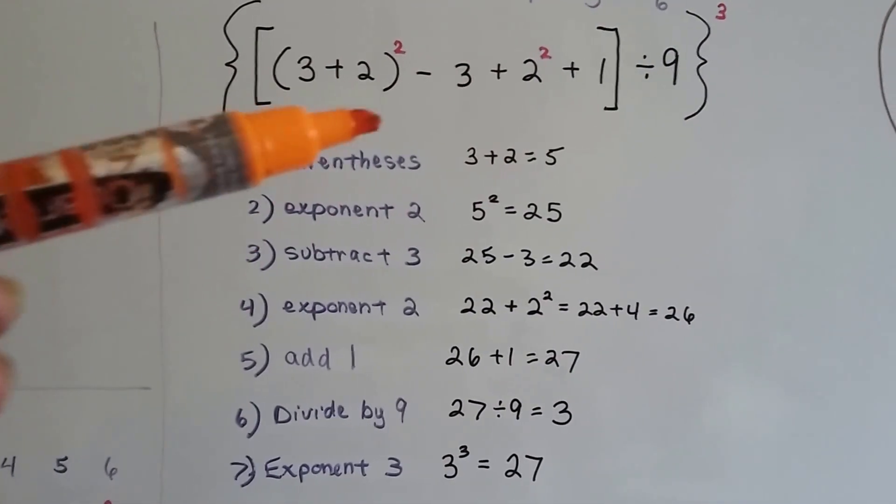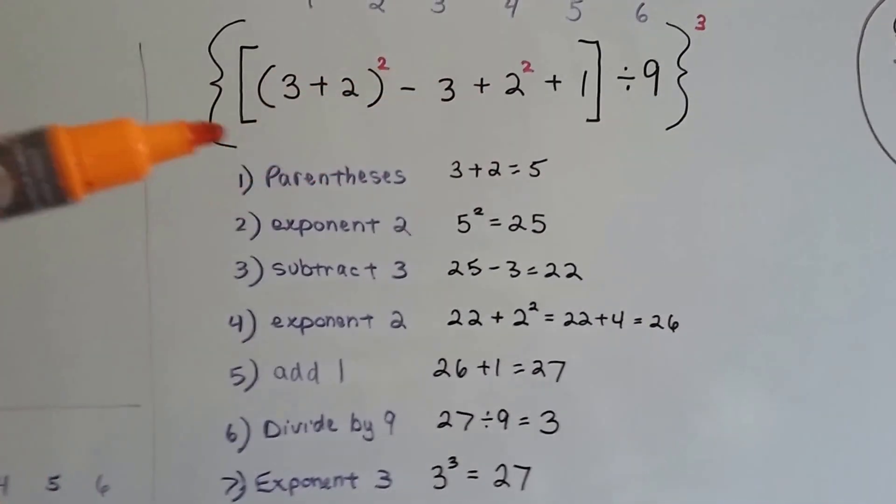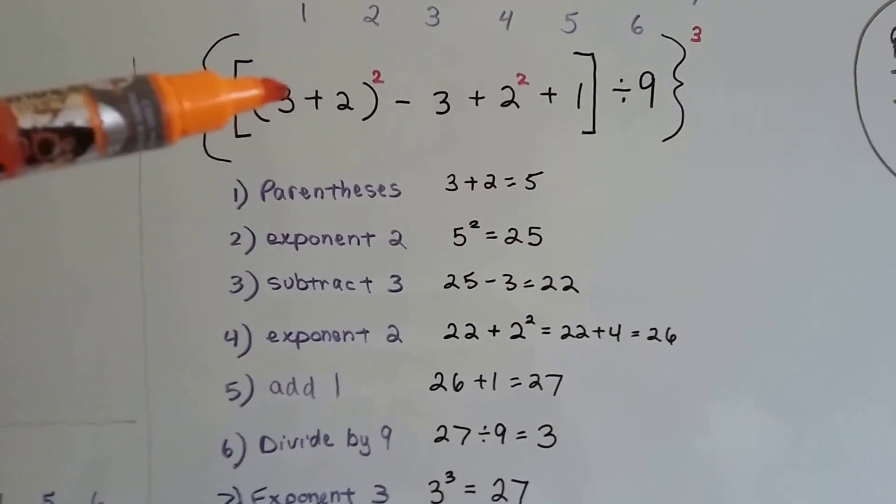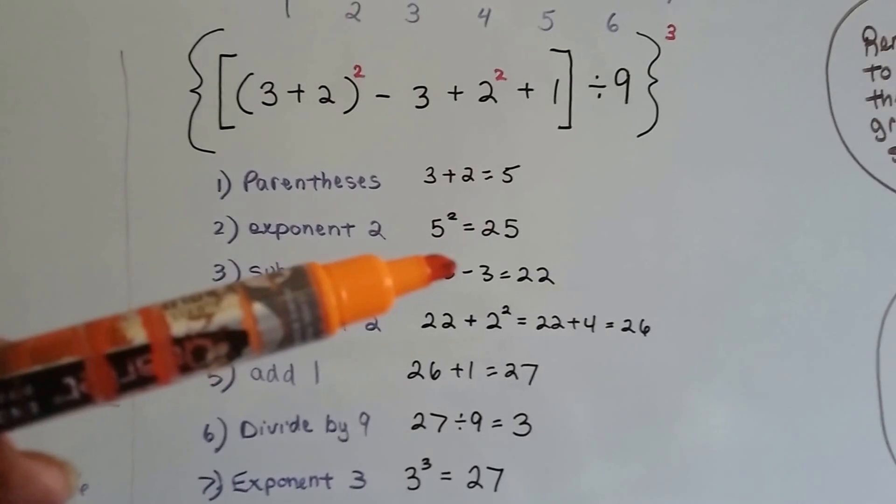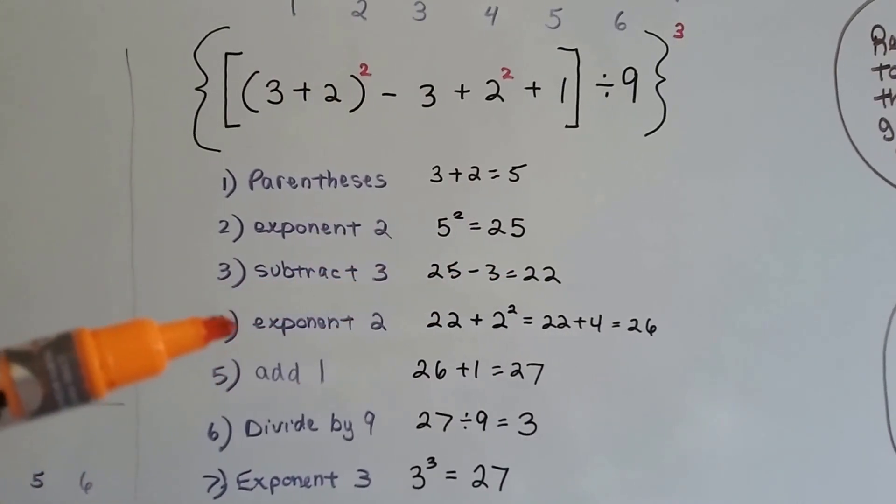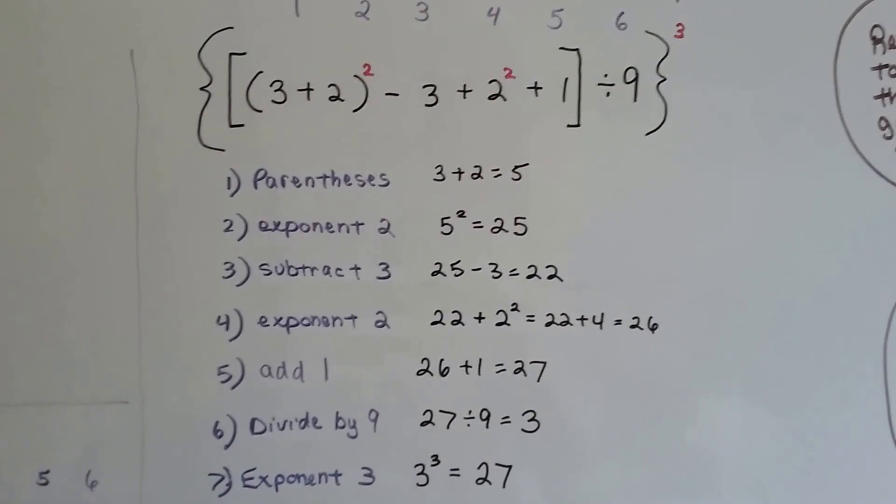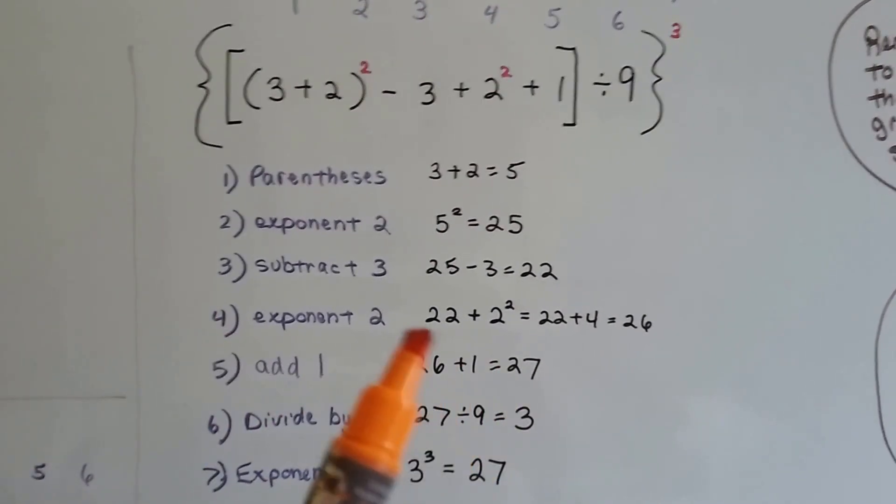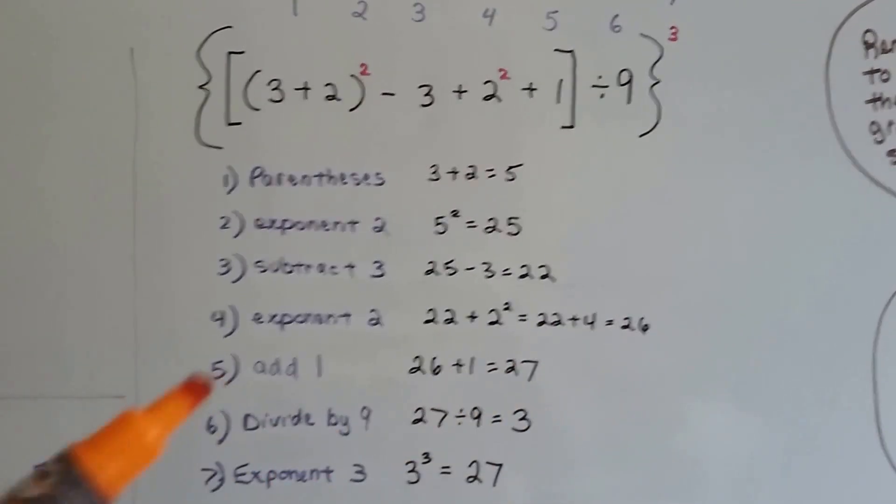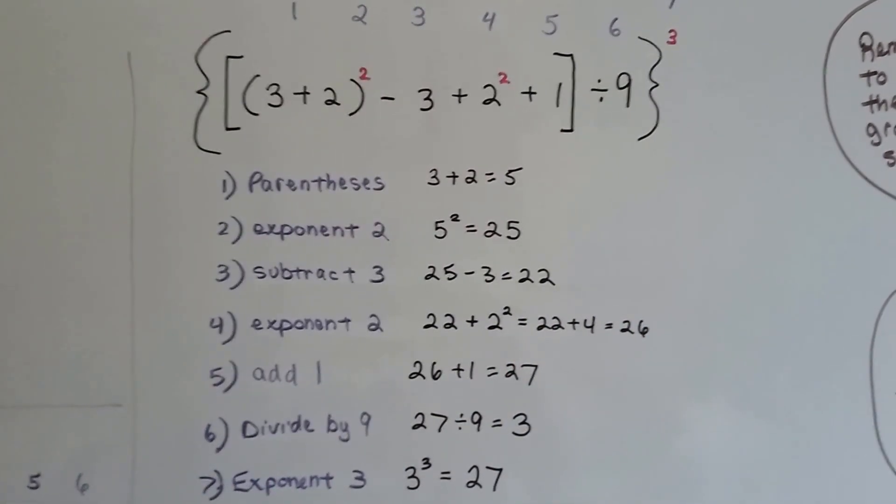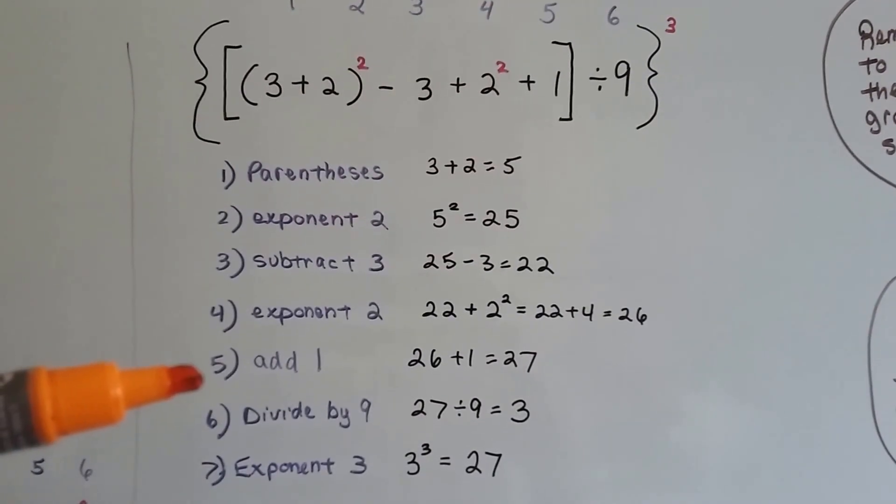The next thing we're going to do is subtract this 3. Now I know there's an exponent there, but we're going to add from left to right. We're still inside these brackets here. So we're going to subtract 3. We've got 25 take away 3 is 22. Now we're going to do the exponent. 2 squared is 4. So 22 plus this 4 is 26. Now we're at step 5. Right here we're going to add this 1. We're still inside the bracket. 26 plus 1 is 27.